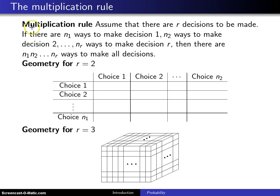So we begin with the multiplication rule, and here it is. Assume that there are r decisions to be made. If there are n1 ways to make decision 1, n2 ways to make decision 2, all the way up to n sub r ways to make decision r,